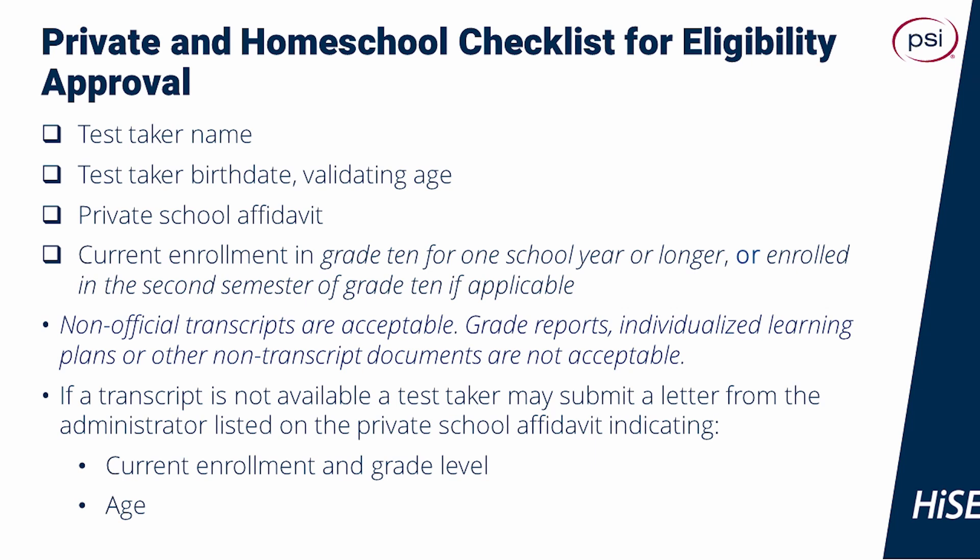The checklist for private school eligibility approval includes the test taker name, test taker birth date validating age, private school affidavit, and current enrollment in grade 10 for one school year or longer, or enrolled in the second semester of grade 10 if applicable. Non-official transcripts are acceptable; grade reports, individualized learning plans, or other non-transcript documents are not acceptable. If a transcript is not available, a test taker may submit a letter from the administrator listed on the private school affidavit that indicates current enrollment in grade level and age.